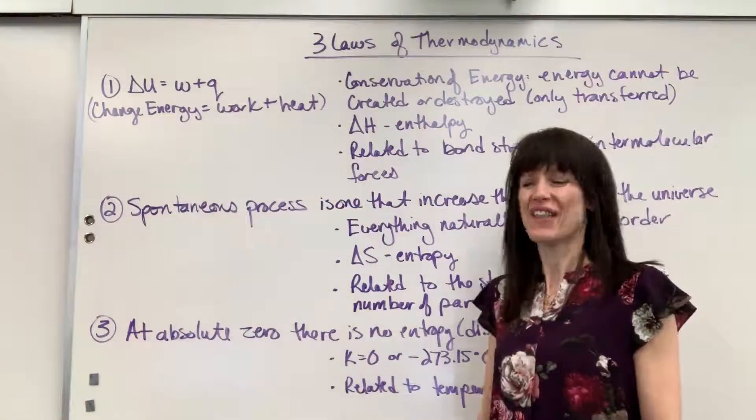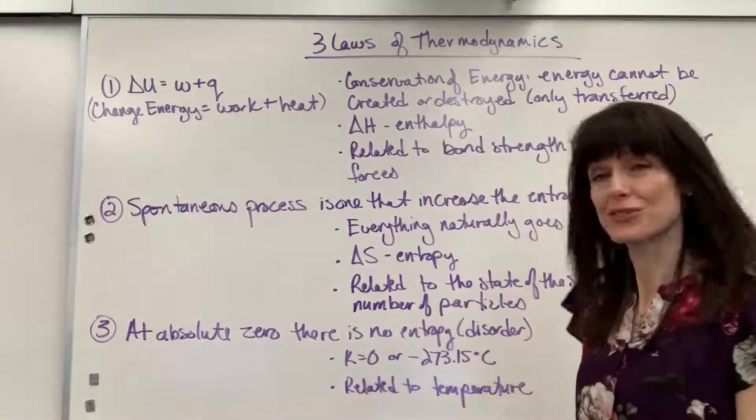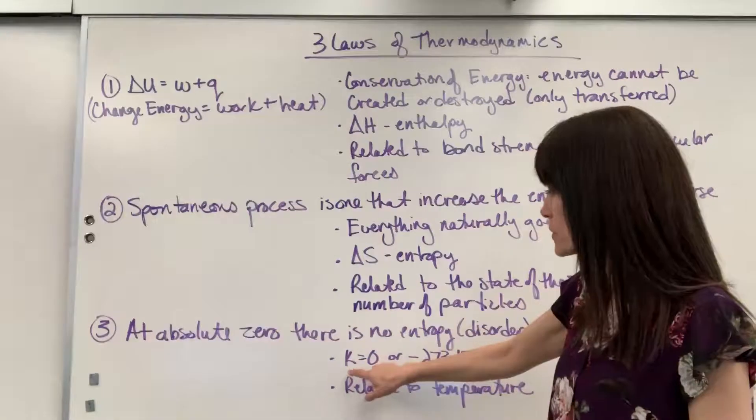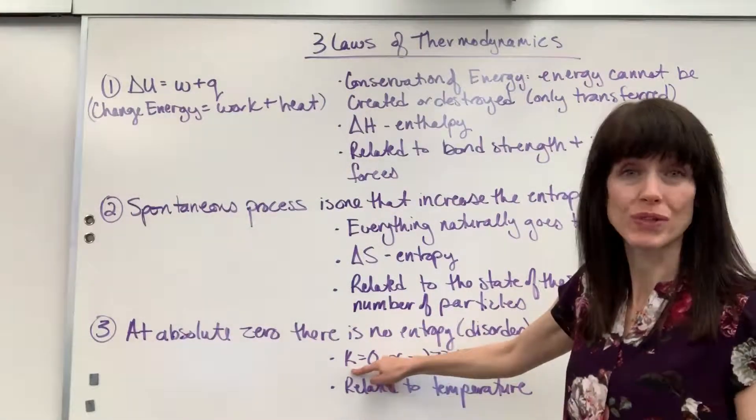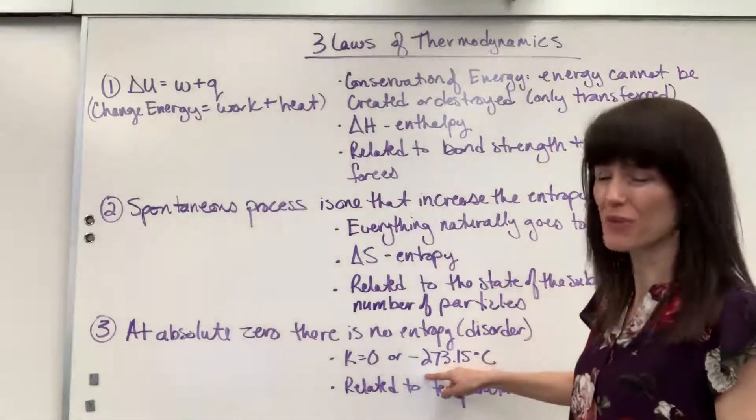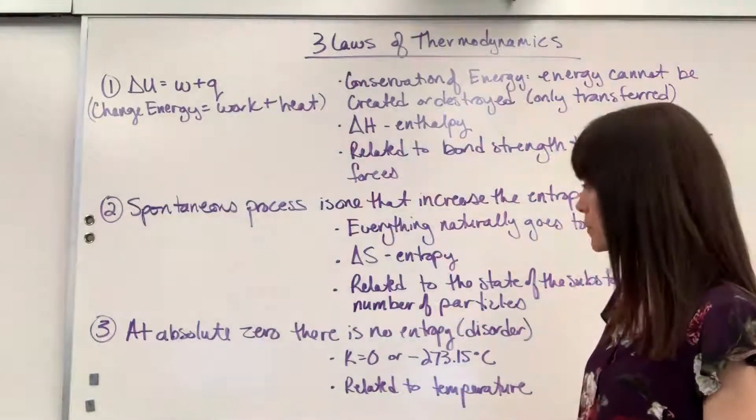Third law. Here we go. Third law, thermodynamics. At absolute zero, there's no entropy. There's no disorder. So just a reminder, absolute zero, this is when Kelvin is zero. So the coldest temperature possible. Or remember that's negative 273.15 degrees C. So this is related to temperature.